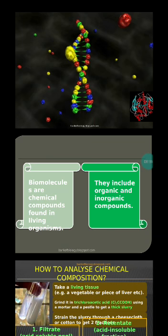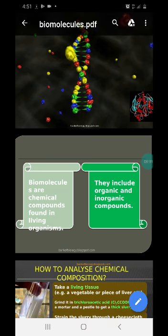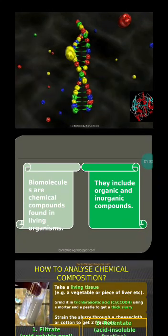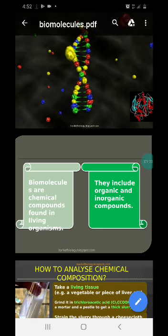What are cells made up of? You may give the answer as cell wall or cell membrane and other different components of the cell. What is the cell wall made up of? It is cellulose. And what is the cell membrane made up of? It is made up of lipids and proteins. And the cytoplasm has many organic and inorganic components dissolved in it. So we can finally conclude that we are made up of these chemical substances.